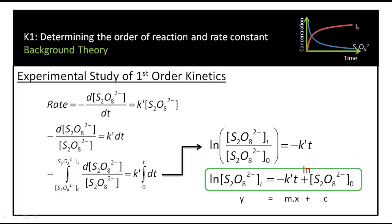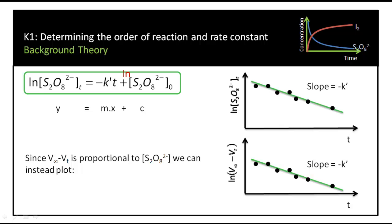For first-order kinetics, since the order with respect to persulfate is 1, there is a derivation where the rate of disappearance of persulfate equals K′[S₂O₈²⁻]. This is a differential equation we can rearrange and integrate. The key result is: ln[S₂O₈²⁻]t = −K′t + ln[S₂O₈²⁻]₀. This has the form of a straight line, Y = Mx + C. So if we plot the natural log of persulfate concentration against time, we can determine the rate constant from the slope.